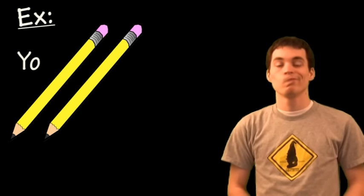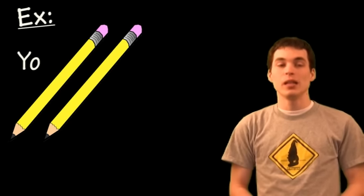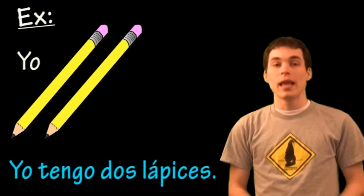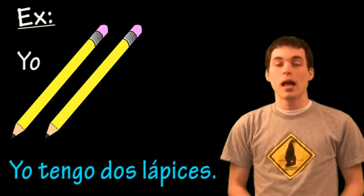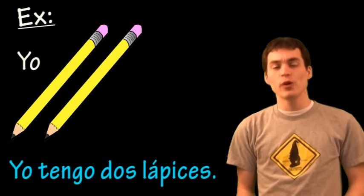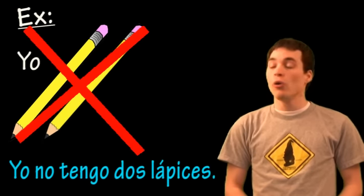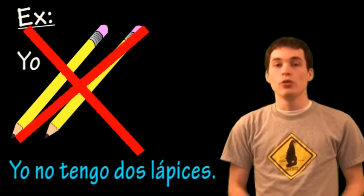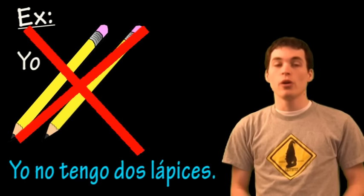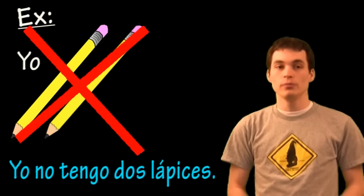Por ejemplo: this would have you write the sentence Yo tengo dos lápices. If it were negative, notice the X — Yo no tengo dos lápices. The no goes after the subject and before the verb.